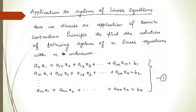Let's suppose we have n linear equations with n unknowns. This is a11·x1 + a12·x2 + a13·x3 + ... + a1n·xn = b1, and similarly for the others. So these are n linear equations in n unknowns, and we have to find the solution of this system using the contraction principle.